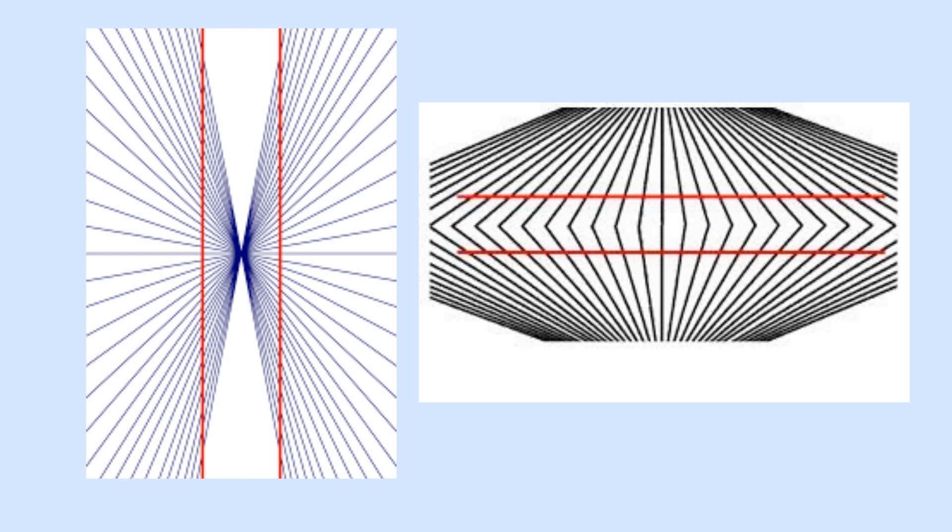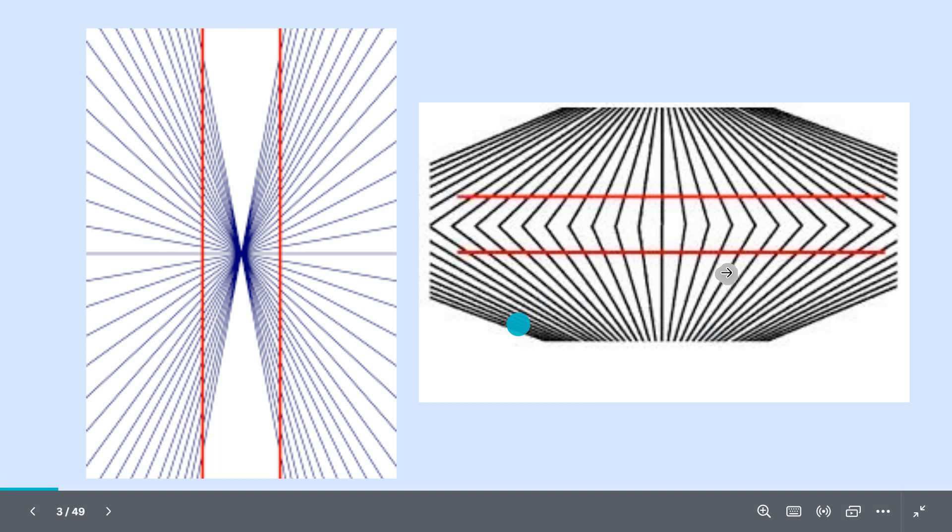Because these two red lines are straight lines. We misinterpret these straight lines as curved because of the background picture. Our brain tends to focus more on background pictures so that it misinterprets these two straight lines.